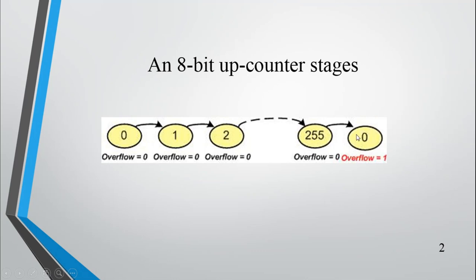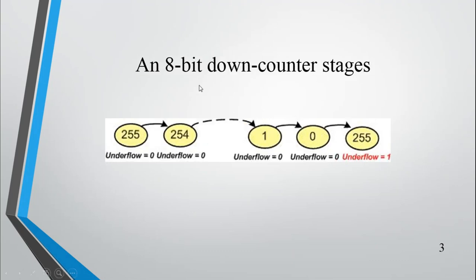How will we understand that a rollover or overflow has taken place? Generally, there will be a flag known as the overflow flag, which will be set to 1. Similarly, in the case of an 8-bit down-counter, you load the maximum 8-bit value — 255. Whenever it gets a clock, it decrements to 254, 253, down to 0. When reaching 0, it rolls over to 255, and an underflow flag will be set.